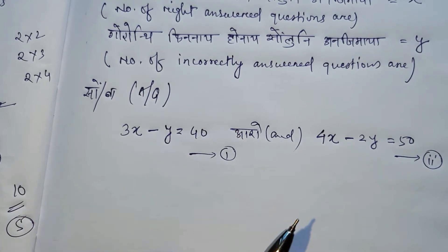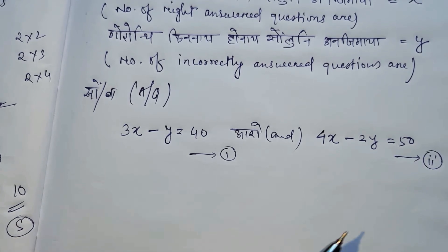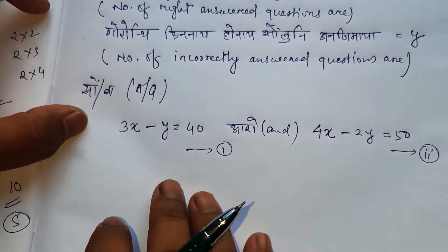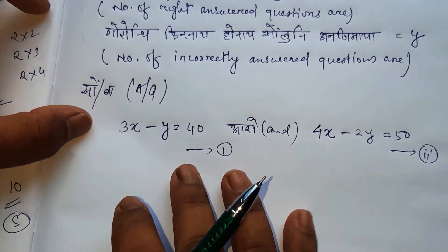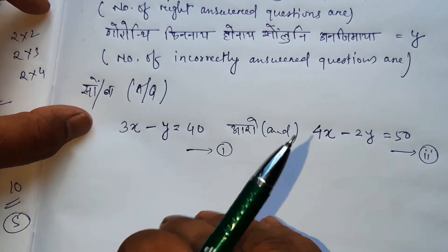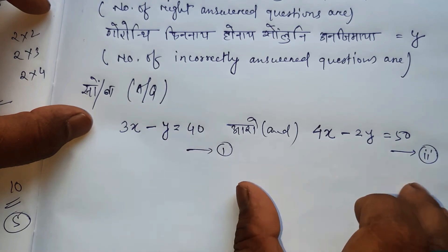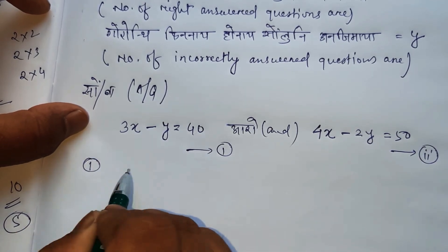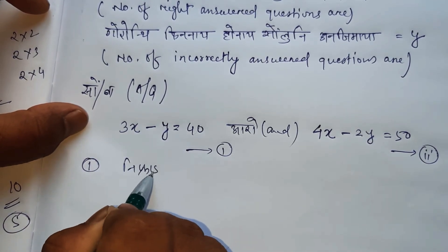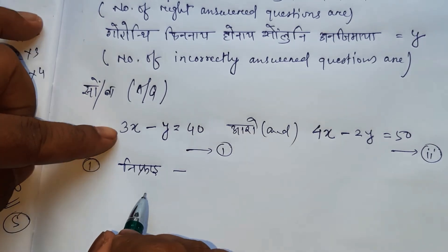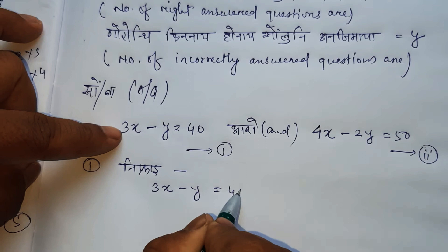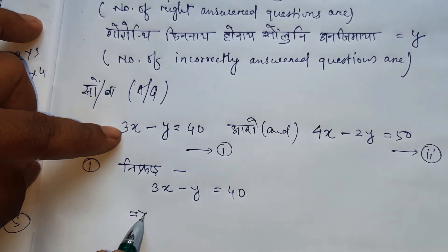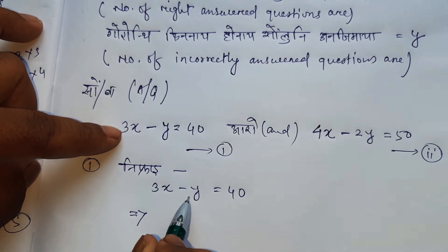We can use any one method: substitution method, elimination method, or cross multiplication method. We will use the elimination method. From equation 1: 3x minus y equals 40.